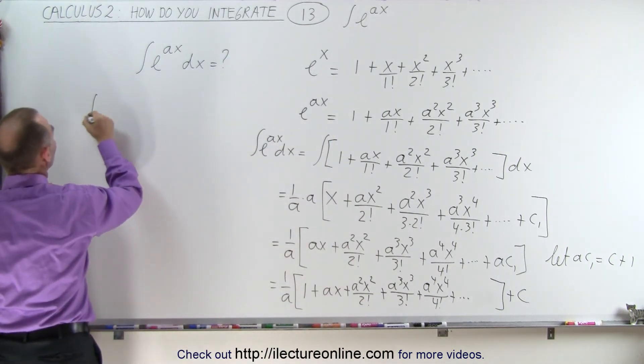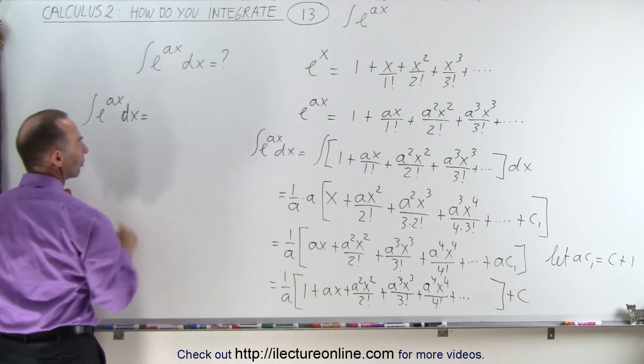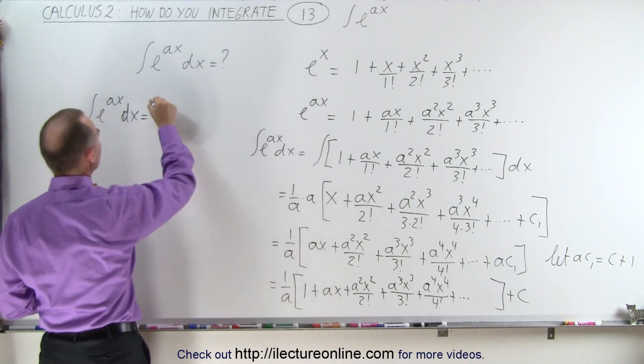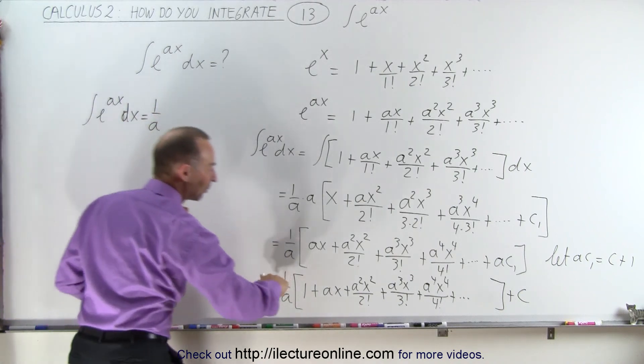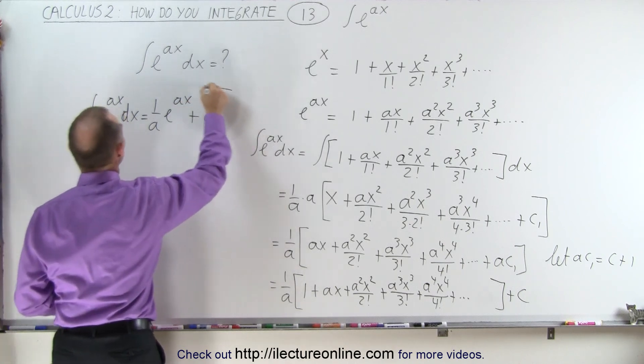That means that the integral of e to the ax times dx is going to be equal to 1 over a times what's inside the brackets, which is e to the ax, plus a constant of integration.